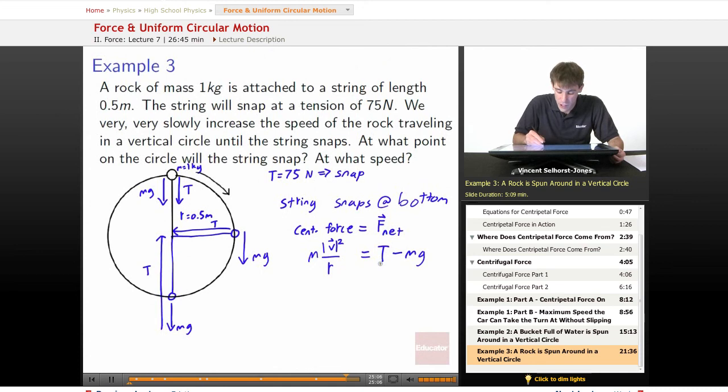So we've got that the tension is 75 and we can now start subbing things in. So at the instant of snapping, the tension is 75. We know what the mass is. We know what gravity is. We know what the radius is. We know what the mass is. Now it's just up to us to figure out what v squared is.